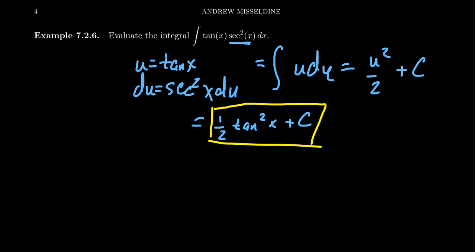Now what I want to do is actually show you in comparison that we have an even number of secants, but we also have, since we have one tangent, we could take one tangent and the secants, and we could do a u substitution there.